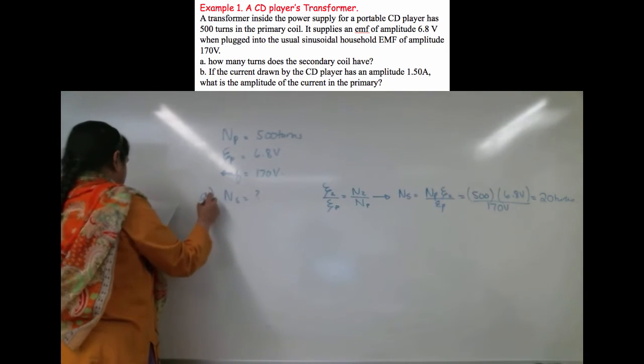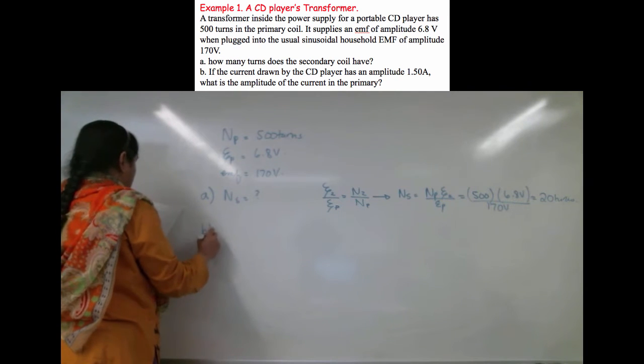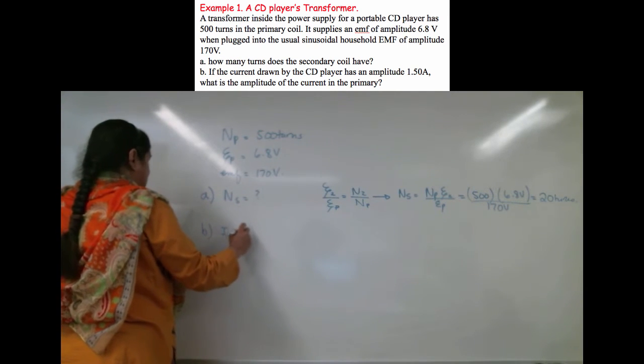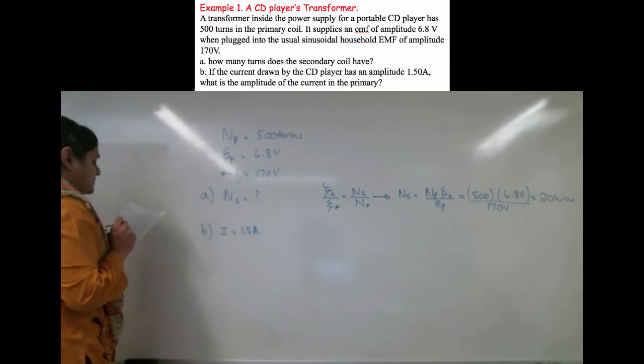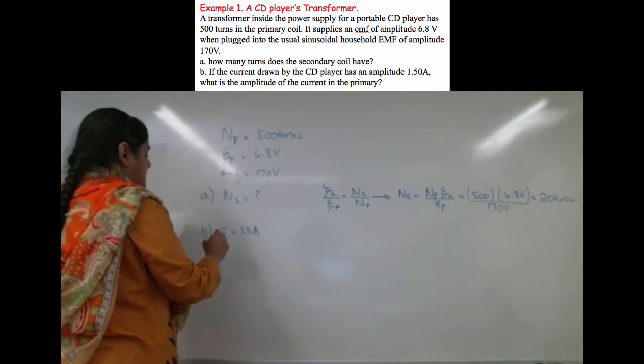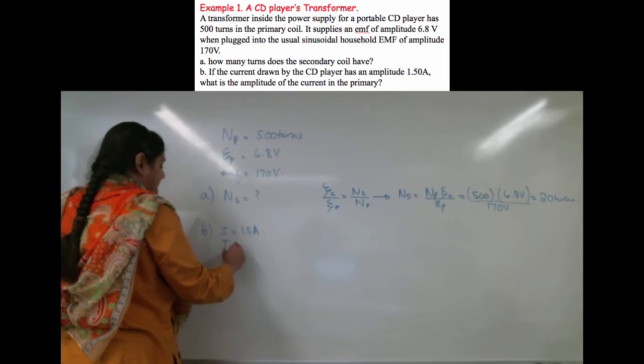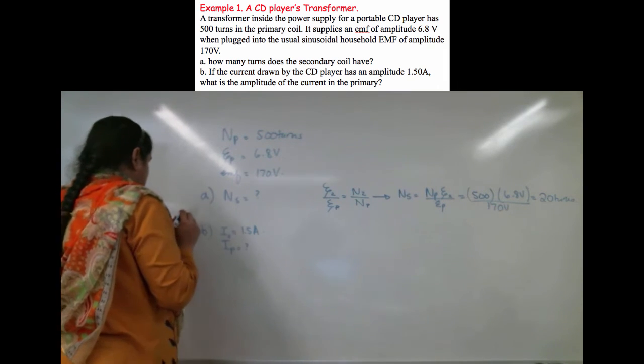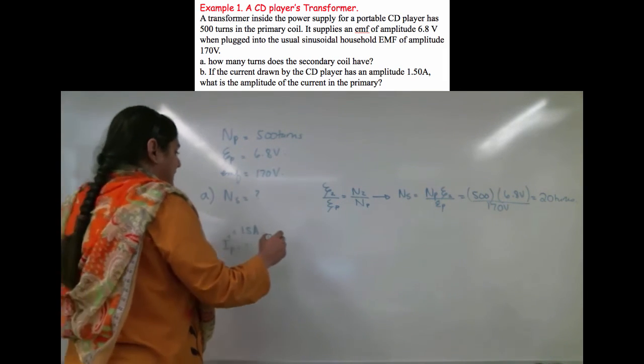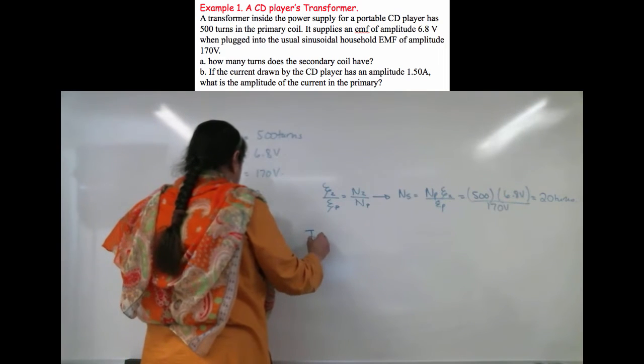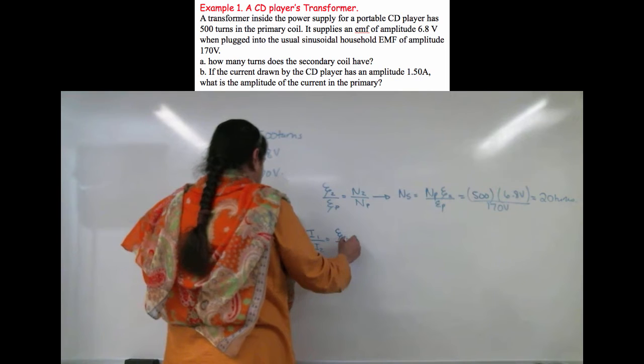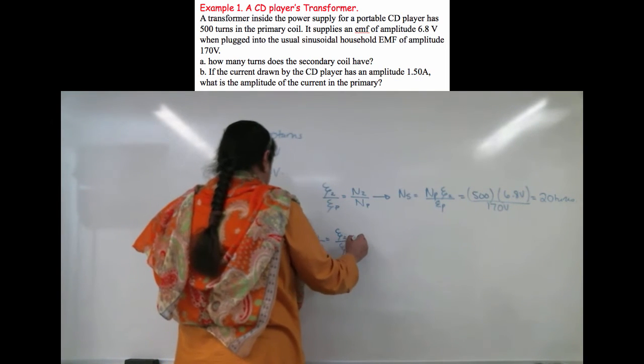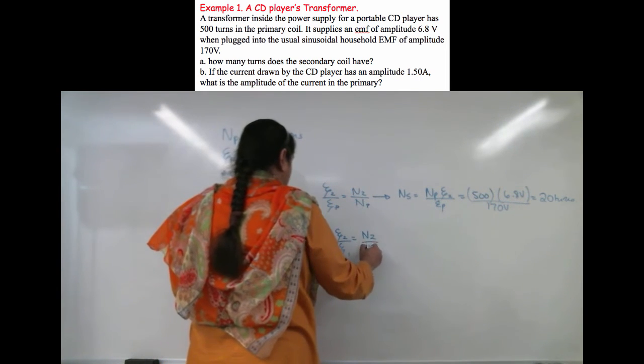Part B. It says the current drawn by the CD player is 1.5 amps. So what is the amplitude of current in the primary?